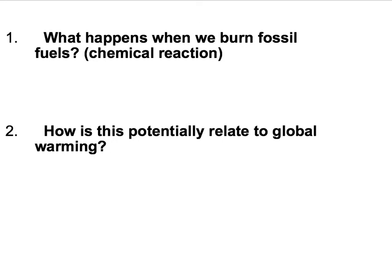I'm going to get to what causes global warming, or what many people believe causes global warming, but first we need to talk about what happens when you burn a fossil fuel. When you burn a fossil fuel, you basically take a carbon attached to a hydrogen. They're not usually that simple — a very simple fossil fuel would have four hydrogens off of it. There are other fossil fuels where you replace a hydrogen with a carbon, but for our sake it doesn't matter. Basically, fossil fuels are hydrocarbons — carbon and hydrogen.